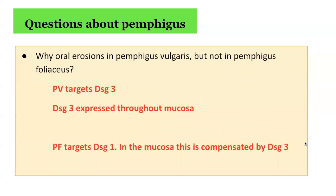For the second question — why are oral lesions present in pemphigus vulgaris but not pemphigus foliaceus? In pemphigus vulgaris, we target DSG3, and it is DSG3 that is expressed predominantly in mucosal surfaces, resulting in erosions forming in this area. In pemphigus foliaceus, the target is DSG1; however, DSG1 in the mucosa is amply compensated by DSG3, and therefore we see no oral lesions with pemphigus foliaceus.